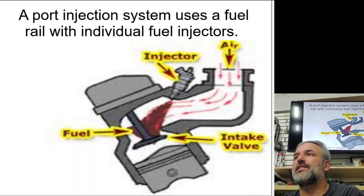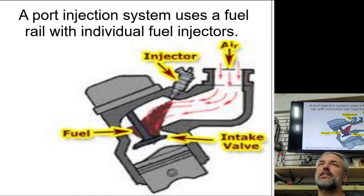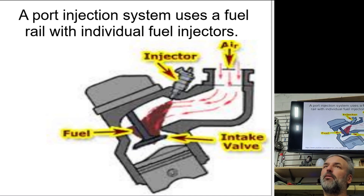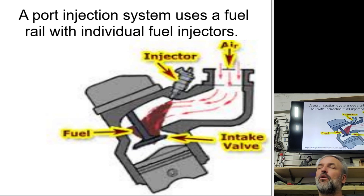A port injection system uses a fuel rail with individual fuel injectors — one injector per cylinder. Pretty much everything after 1996 was required to have port fuel injection, because OBD2 standards require shutting off fuel if an ignition coil, spark plug, wire, or mechanical problem is detected, to protect the catalytic converter.